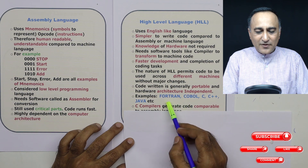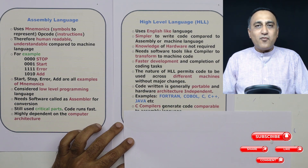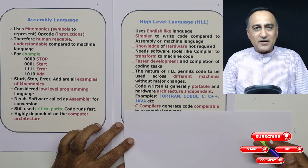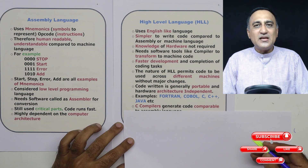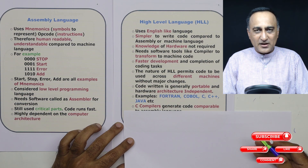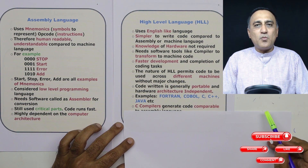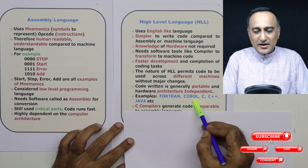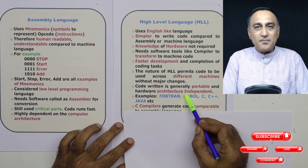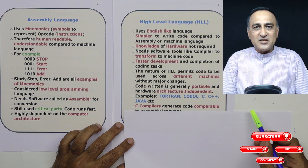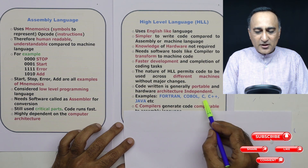Examples of high level languages are Fortran, which stands for Formula Translation, used in engineering, technical, and scientific applications. You have COBOL, which stands for Common Business Oriented Language, which is still widely used in older mainframe machines in banks, insurance companies, and so on.